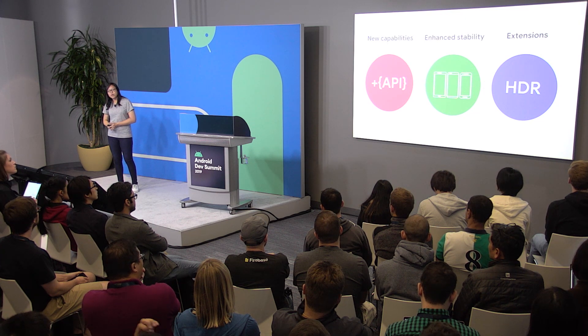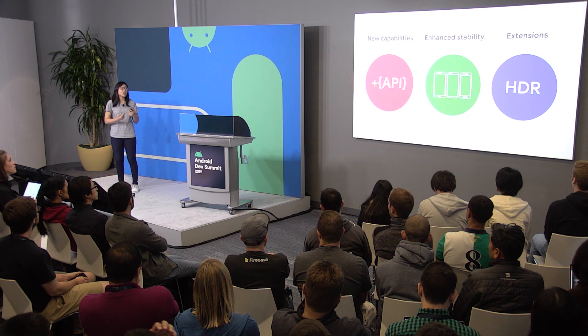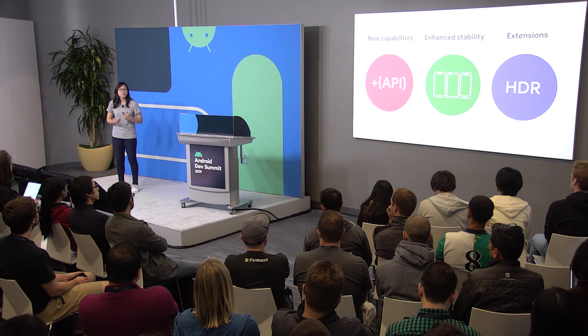The third thing is we also heard there was a lot of excitement over extension functions. Extension functions, if you recall, are these special capabilities that you can now tap into as third-party camera developers. Features such as night mode or HDR that previously were only available for first-party native camera apps are now available for developers. We worked a lot on providing more compatibility for these extension functions.